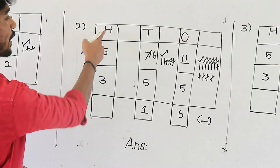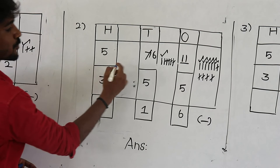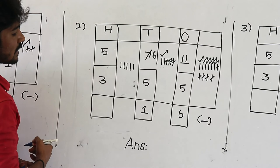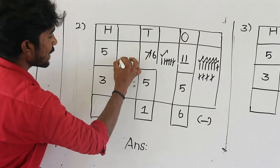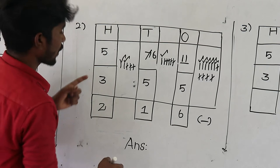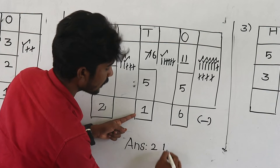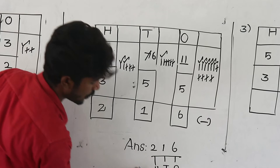Then the last — hundreds place value. Compare the two numbers. Upper value is 5, lower value is 3 — subtraction is possible. Draw 5 lines, cancel 3 lines, count remaining: 1, 2. So 5 minus 3 is equal to 2. Write the answer: first digit 2, second digit 1, third digit 6. Here 6 is ones value, 1 is tens value, 2 is hundreds value. So the answer is 216.